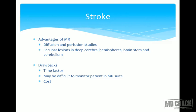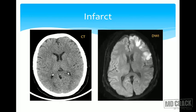The drawbacks of MRI in stroke are the time factor, difficulty monitoring the patient in the MR suite, and cost. In stroke, certain patients become disoriented or uncooperative and keep moving, making MRI extremely difficult in such cases.